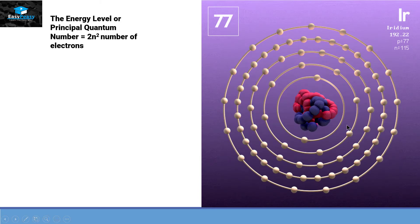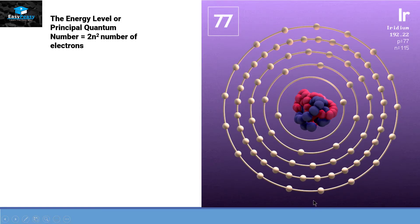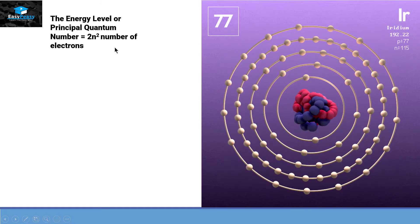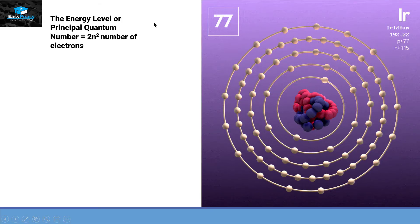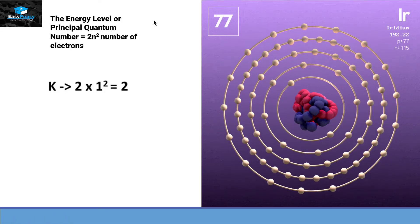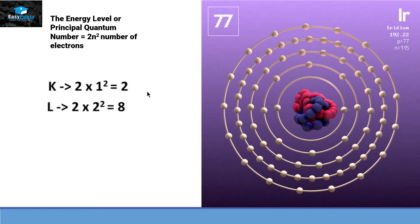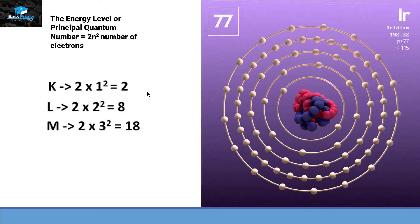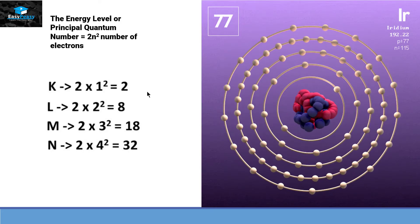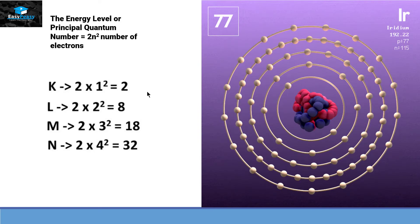If we take a bigger atom, we can see that there are more shells present. In this particular atom we can see 1, 2, 3, 4 and 5 shells. The number of electrons that can accommodate themselves within each shell is represented by 2n². Applying this formula: the first shell can contain 2 electrons, the second 8, the third 18, and the fourth 32.